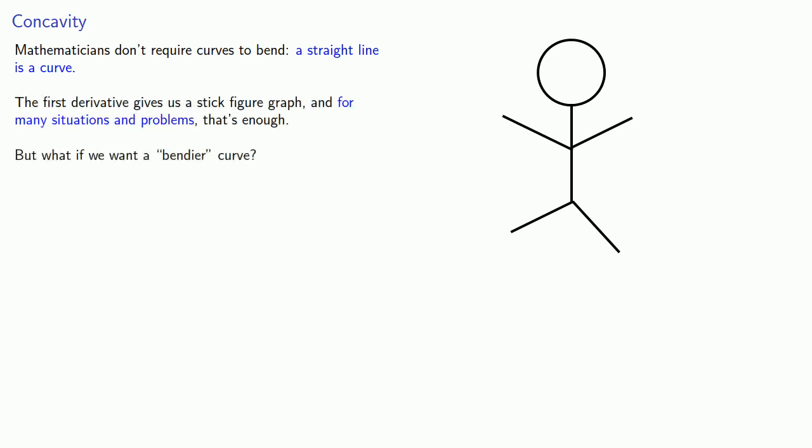But what if we want a bendier curve, something that looks more like what people expect when we mention the word curve? In art, if you want to go from stick figures to the Mona Lisa, you need to learn about contrast and shading and tinting and so on. And in mathematics, we have to learn more about concavity.